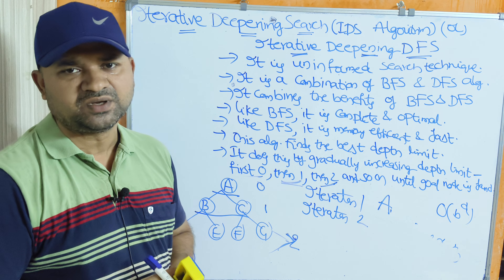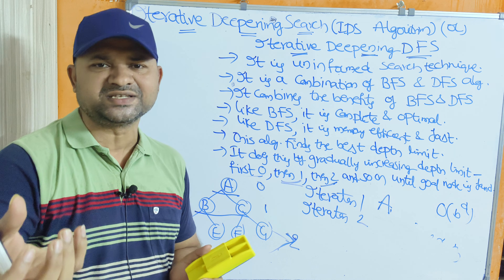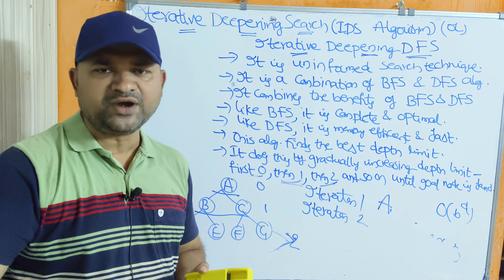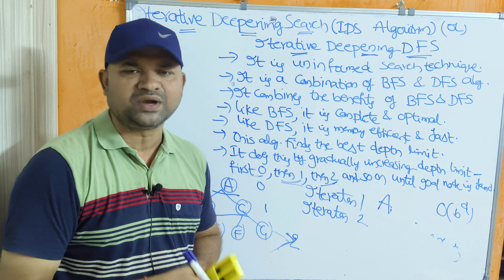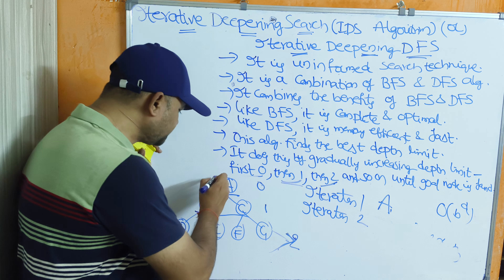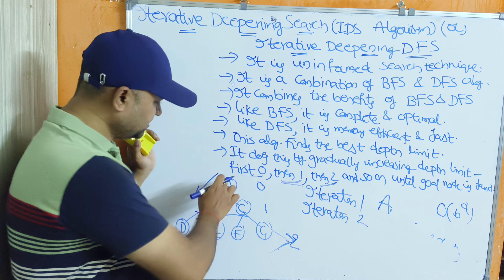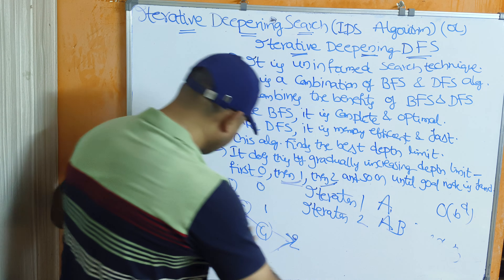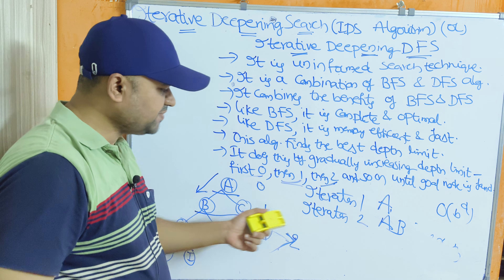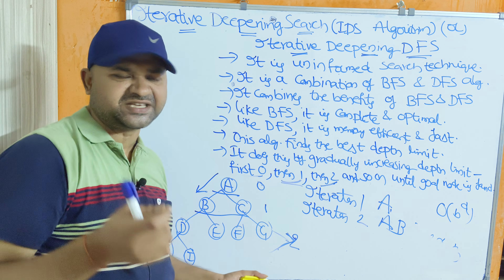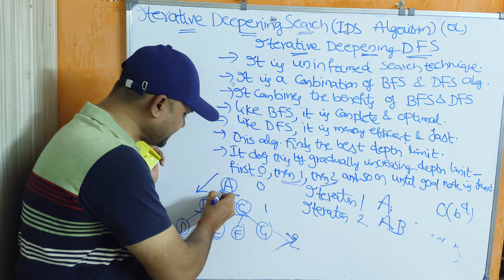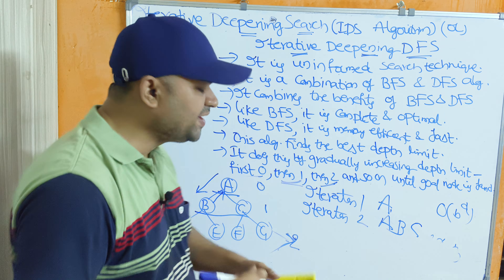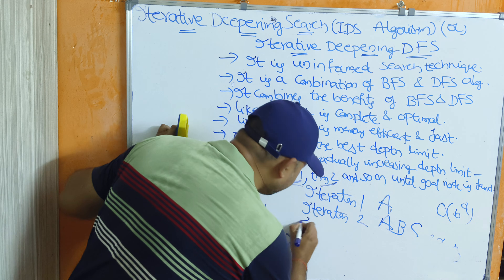In each iteration, depth-first traversal is performed up to the current depth limit. If the goal node is not found at depth zero, depth is set to one; if not found at one, it becomes two, and so on. The traversal follows one path at a time, increasing depth iteratively until the goal is located.